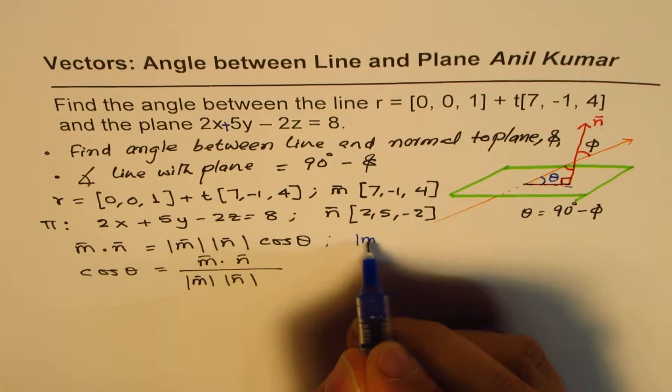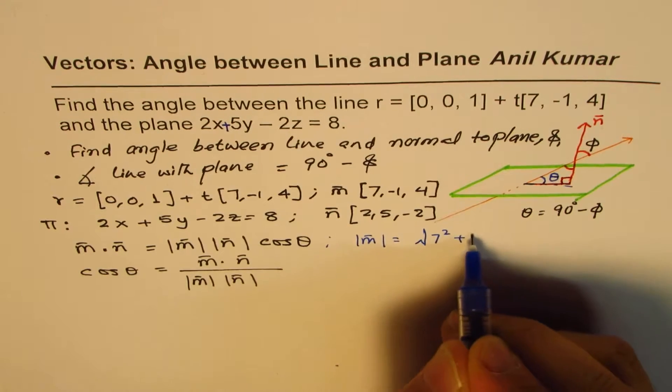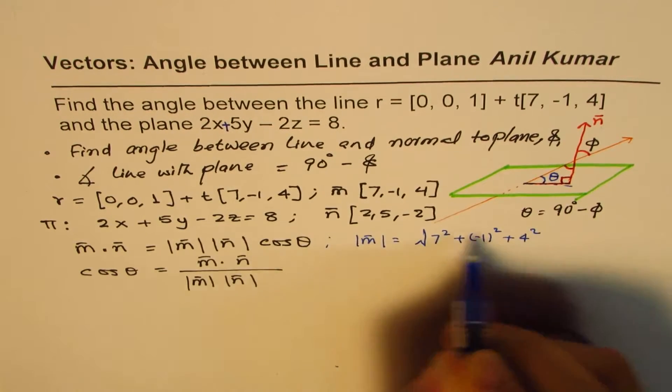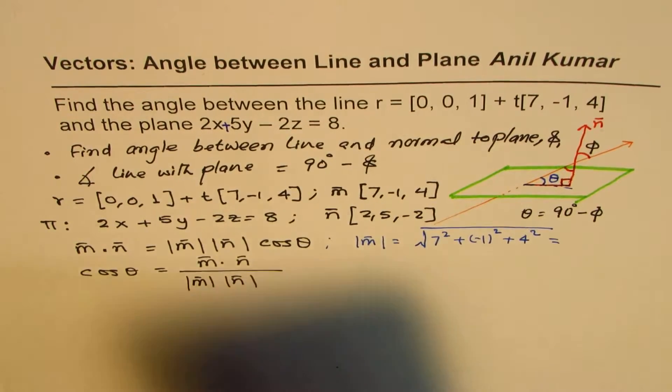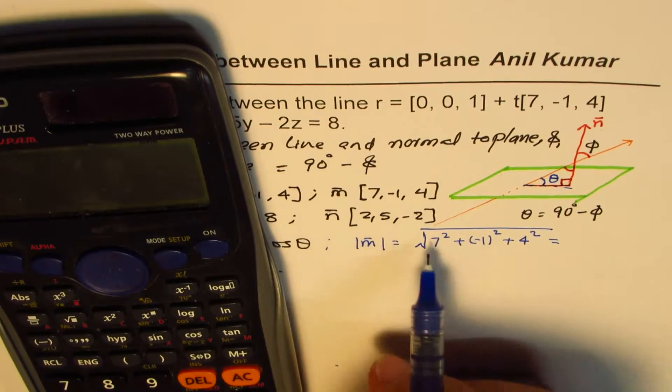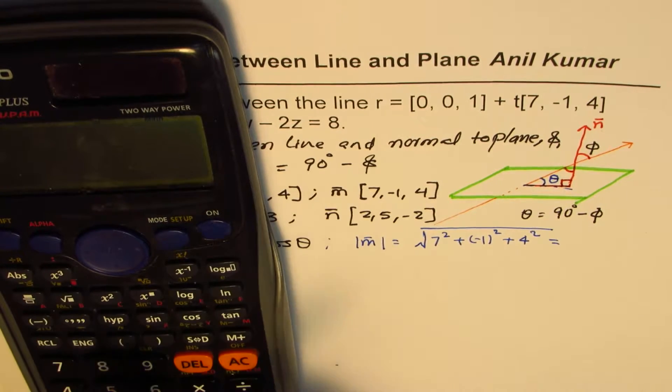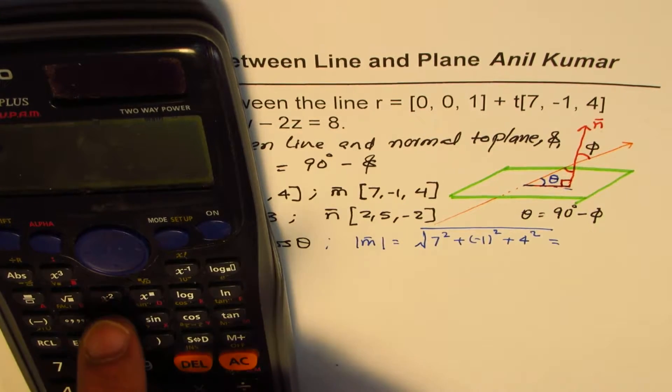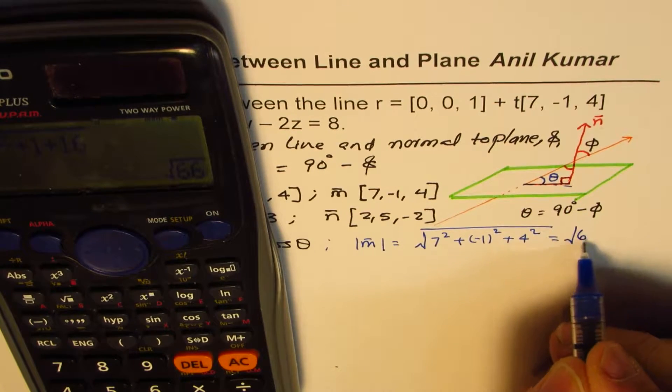Let's find the magnitudes first. The magnitude of M equals square root of 7² + (-1)² + 4². Let's use the calculator: 7² is 49, plus 1, plus 4² which is 16, equals square root of 66.